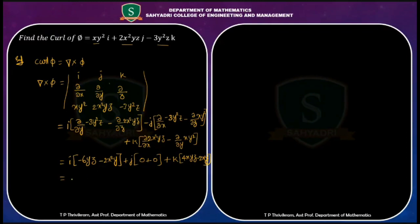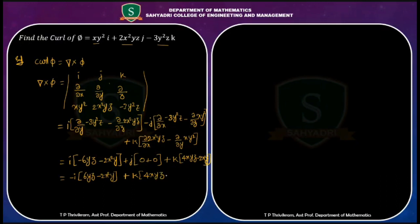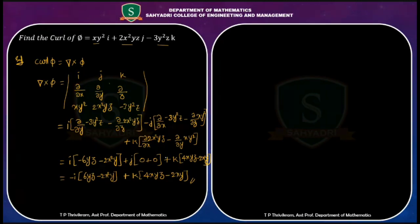Let us simplify. Taking minus common for i: we get −i(6yz − 2x²y). The j component is 0 because no x-term in −3y²z and no z-term in xy², so 0 + 0 = 0. Plus k(4xyz − 2xy). This is the final answer: del cross φ = −i(6yz − 2x²y) + 0j + k(4xyz − 2xy).